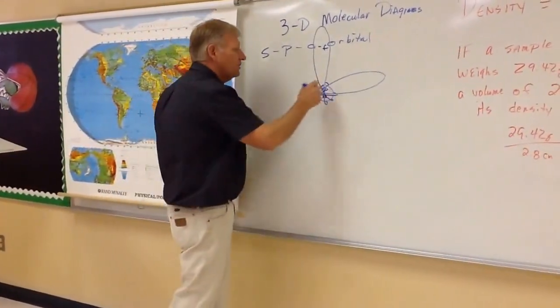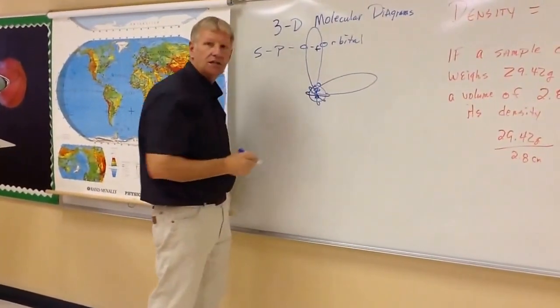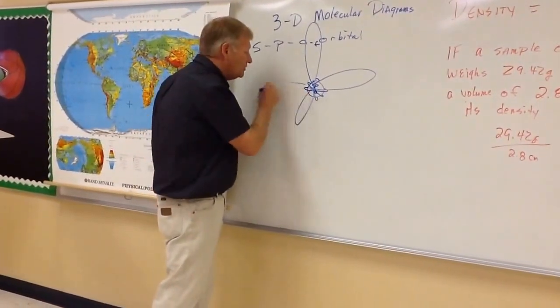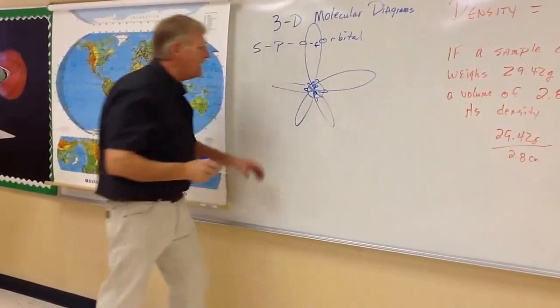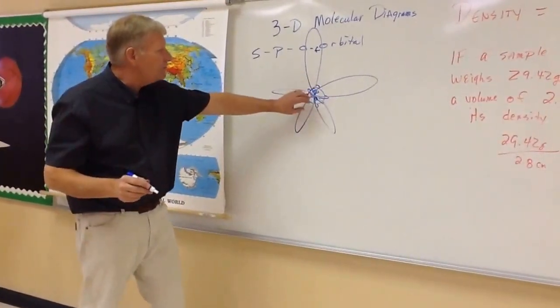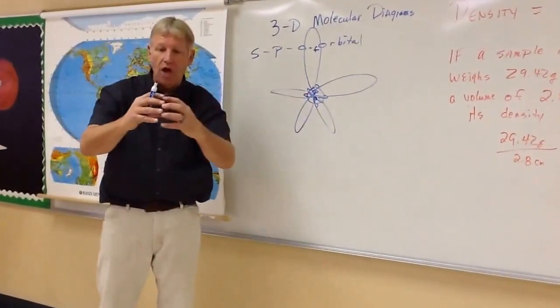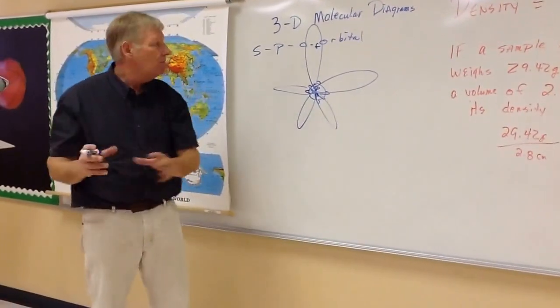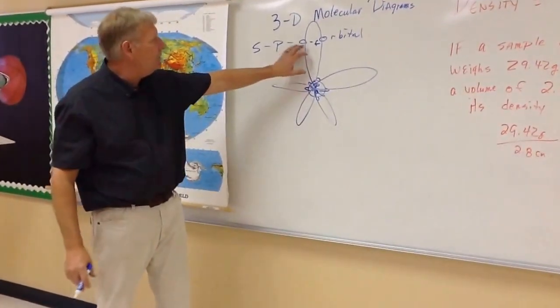Okay, so we have the S orbitals and the Ps. Now, what I want to show you, once again, we won't have this on our next test, but it's coming up because I want you to understand this. So these are the S's and the Ps. Now, they can attach to other elements and make bonds. But then we have the D orbitals and the F orbitals.